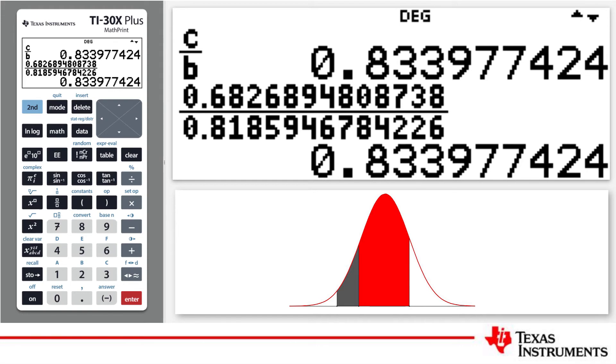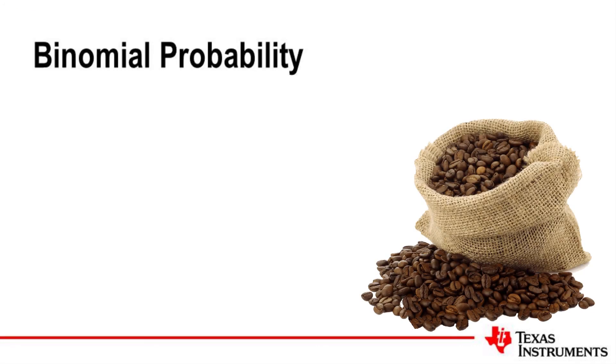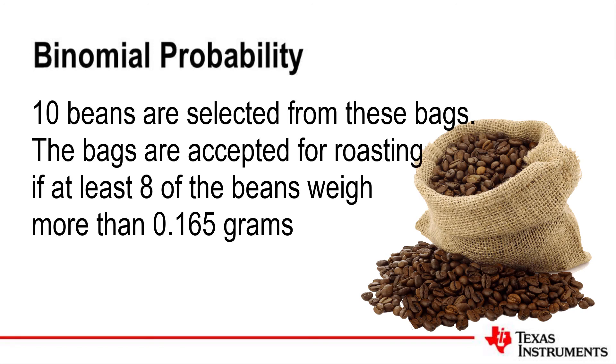Now, we return our attention to the final step in Roasters Quality Control. The problem stated that 10 beans would be selected at random from these bags. The bags are accepted if 8 or more of these beans weigh more than 0.165 grams. These bags are very large, so we can assume that the probability will not change by just removing 10 beans. So, now we have a binomial probability. A bean is either more than 0.165, or it's not.